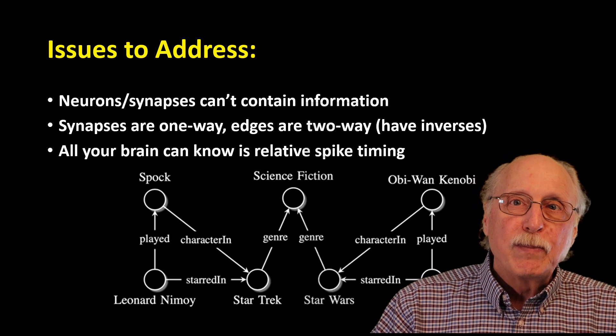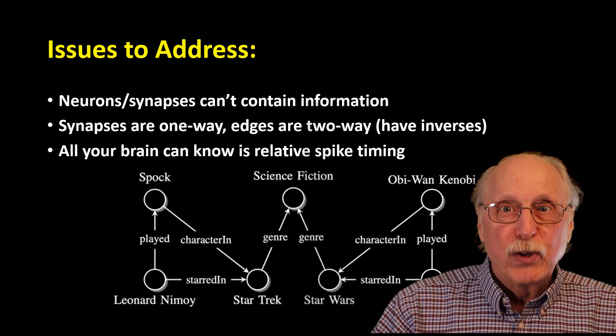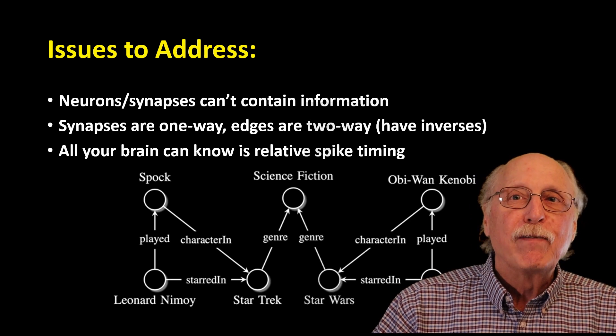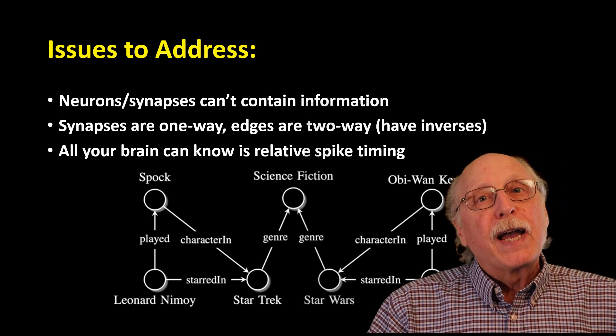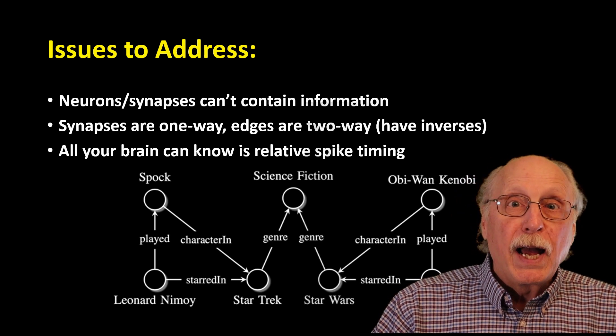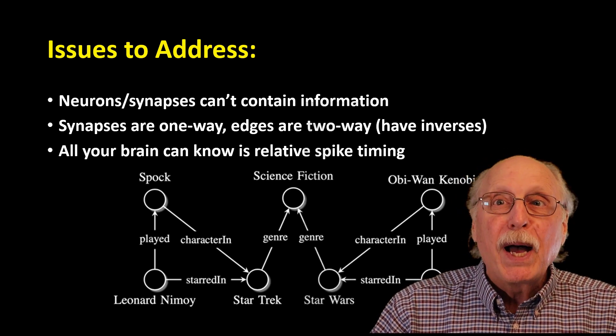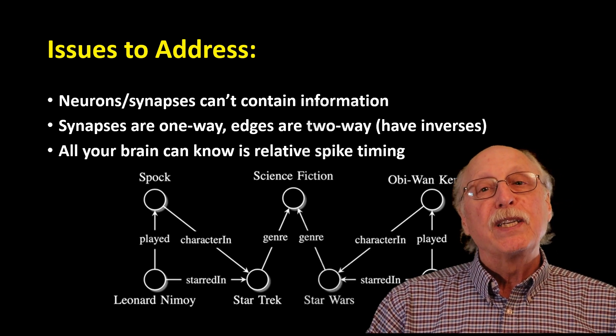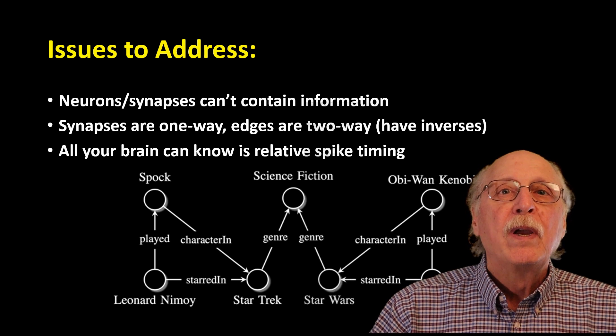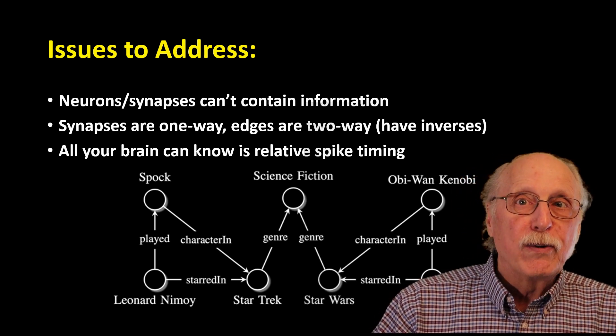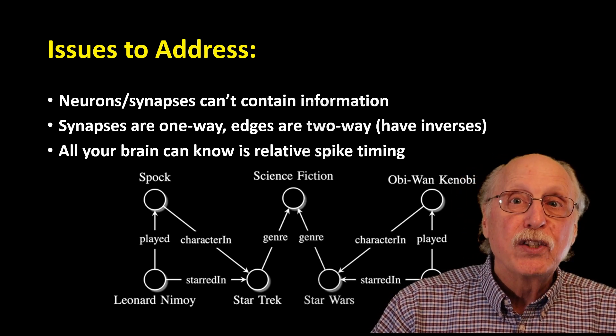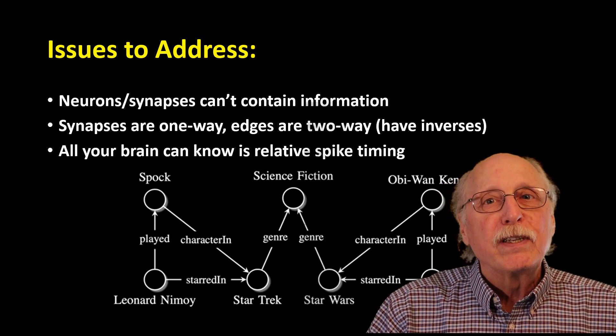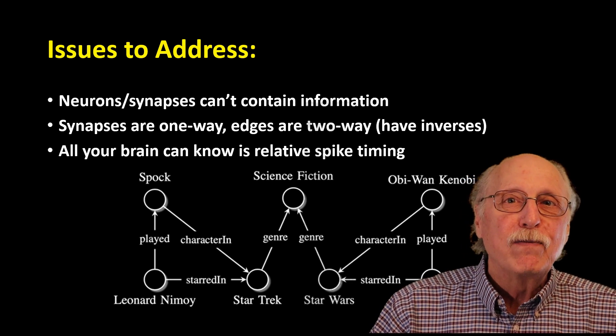Next, synapses are one-way unidirectional, where edges are typically two-way—that is, they have inverses. The fact that Nimoy played Spock implies that Spock was played by Nimoy. While this might be intrinsic in the graph, it must be explicit in the brain. Finally, all your brain can detect is the relative spike timings of different neurons. How it converts these relative spike timings to knowledge is the topic of this video.